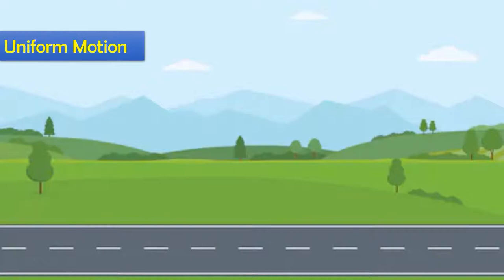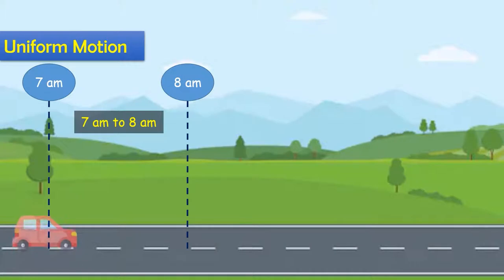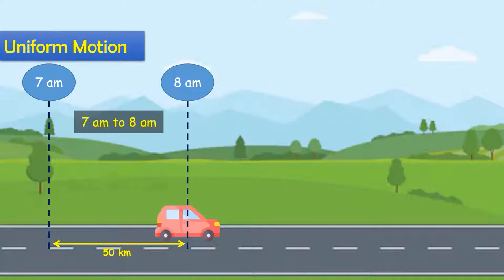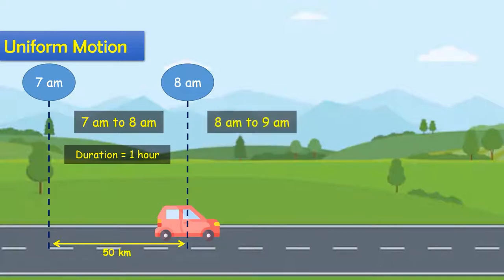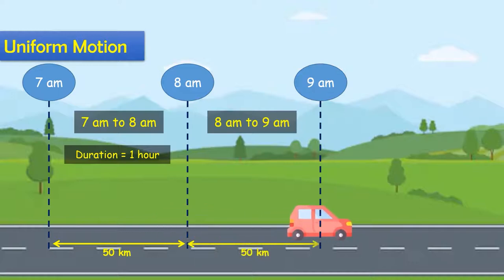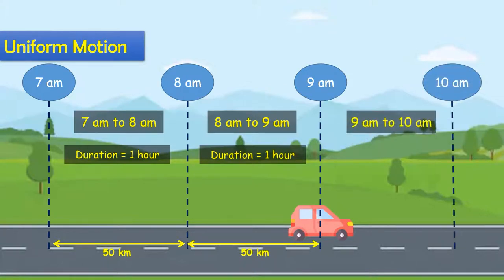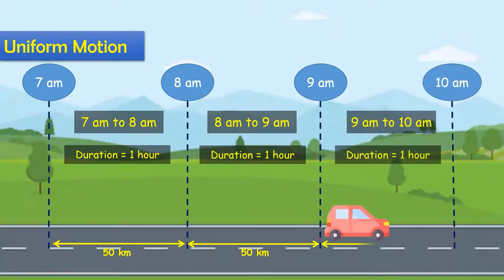Then the data is shown in a table. From 7am to 8am, the body travels a distance of 50 km. In the next one hour, the body again travels a distance of 50 km.